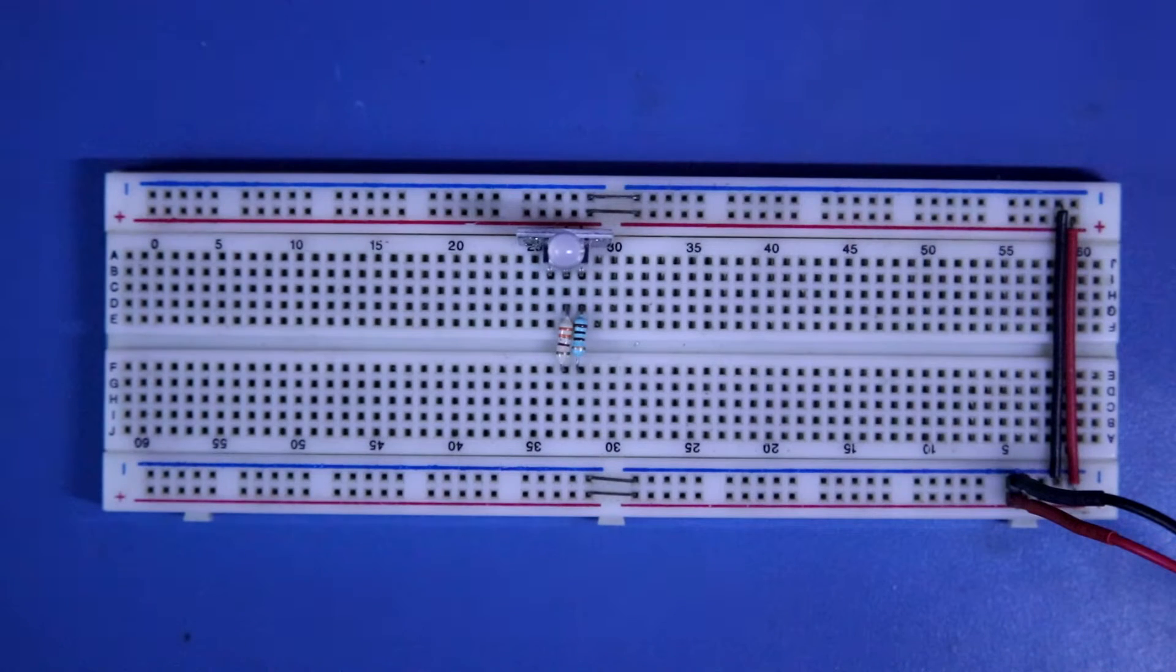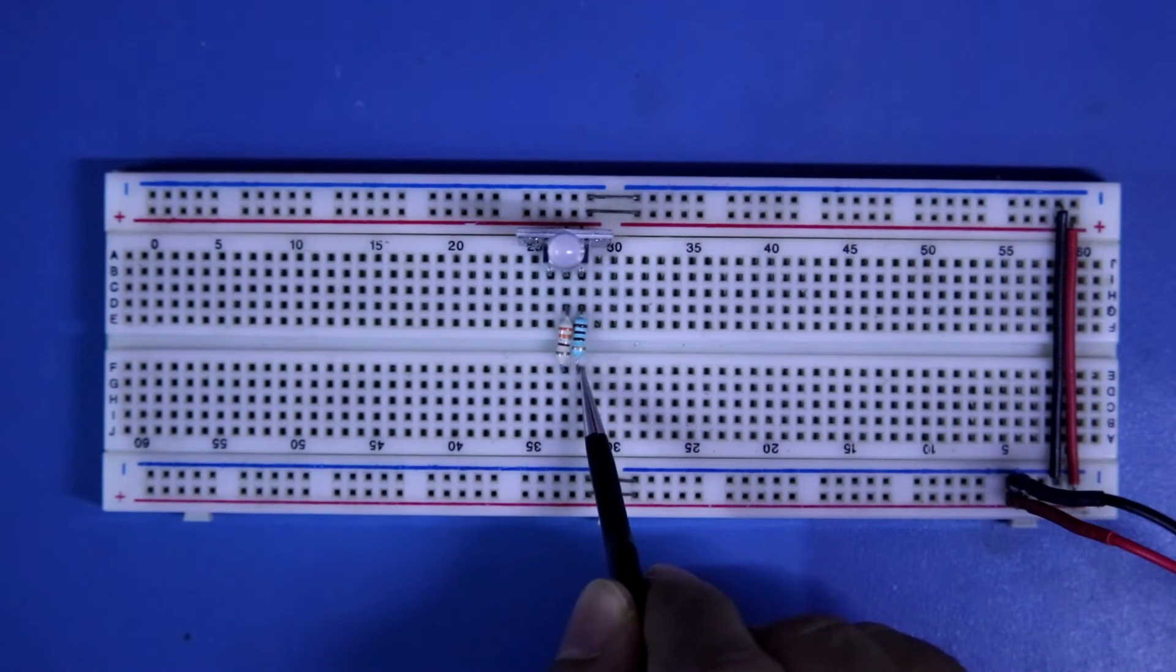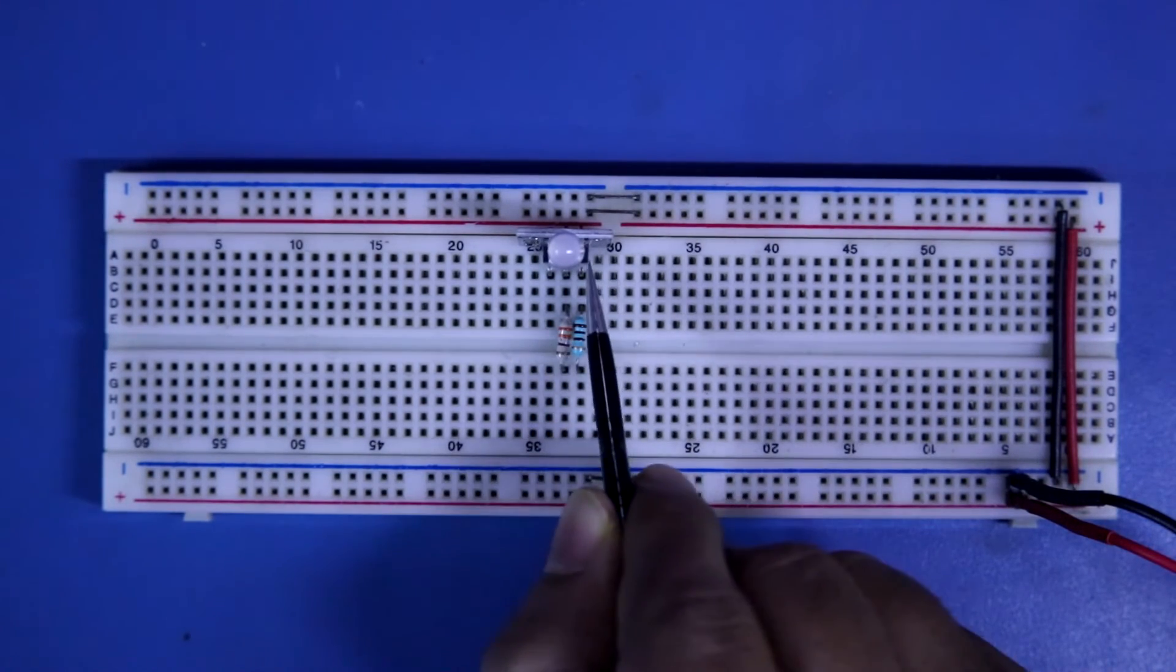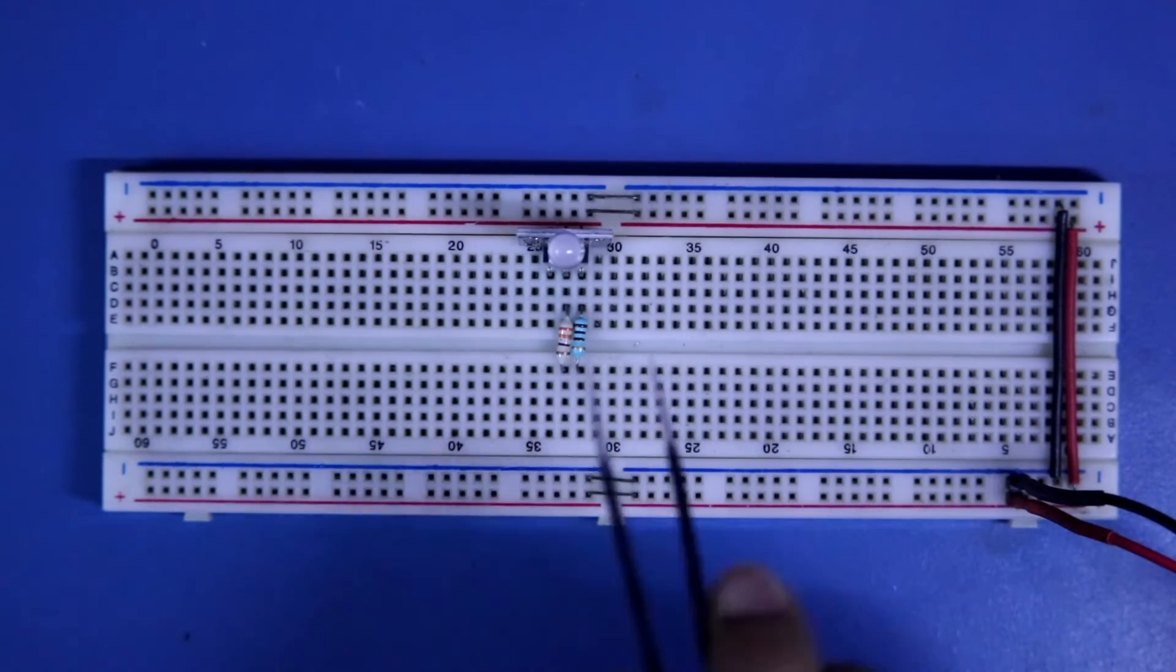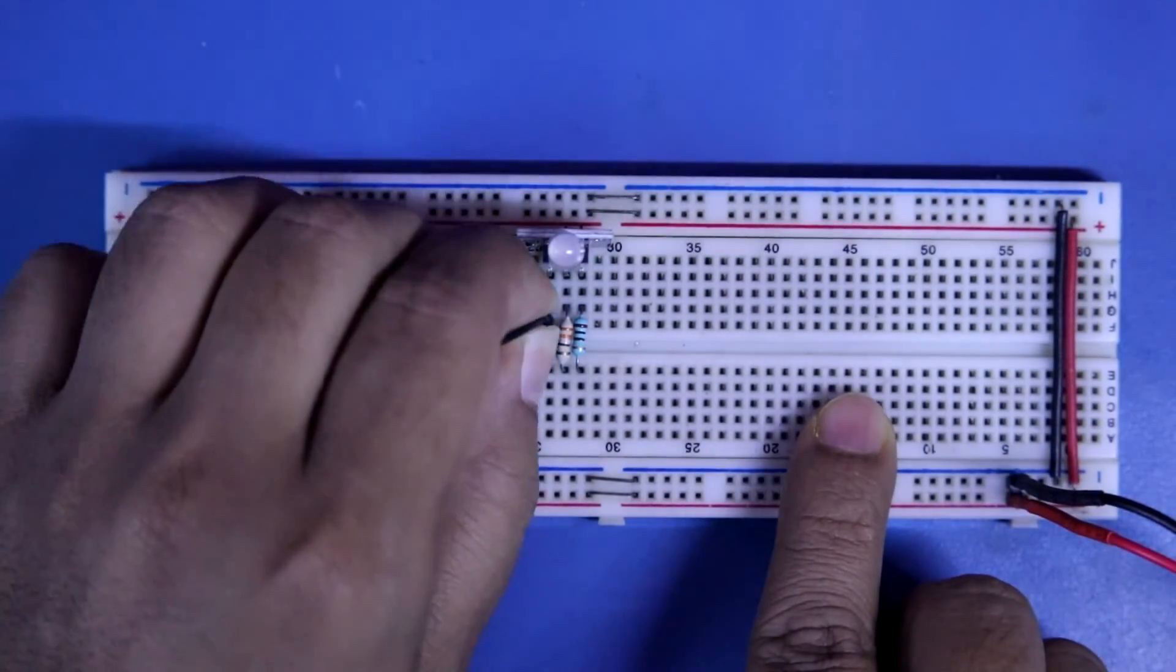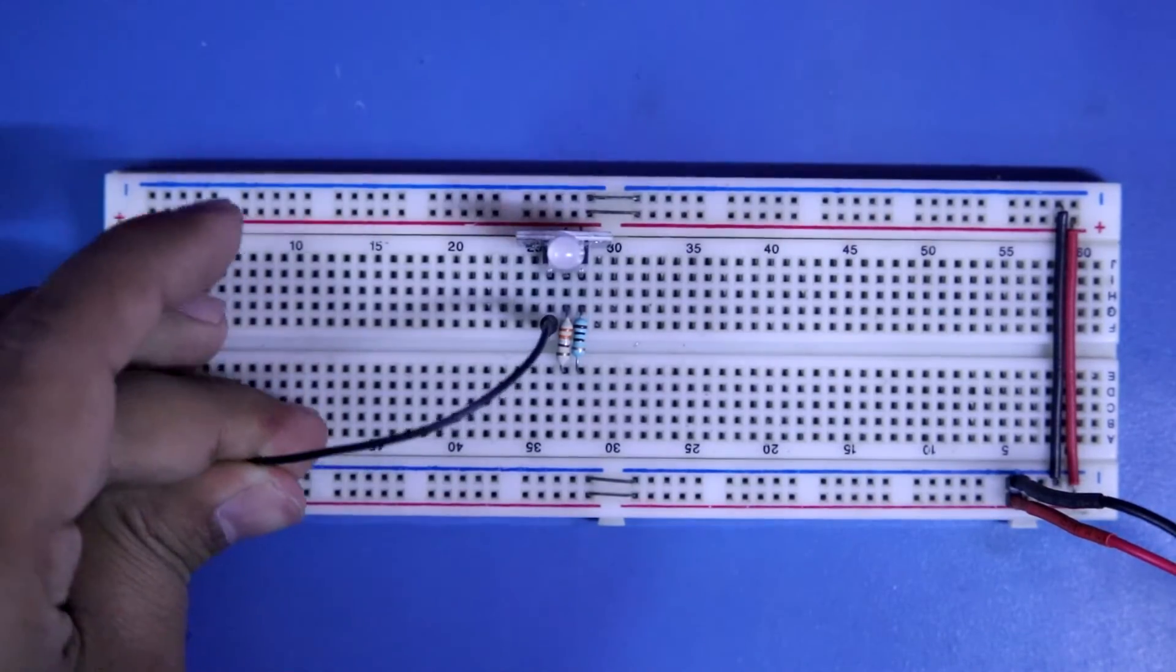Here, I have changed the resistor value. It is 100 ohms and it is 330 ohms. With red pin and with green pin, it is 100 ohms. The other things are same. Negative is connected to the negative rail.